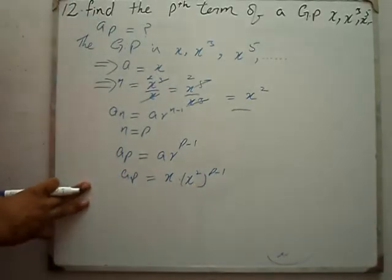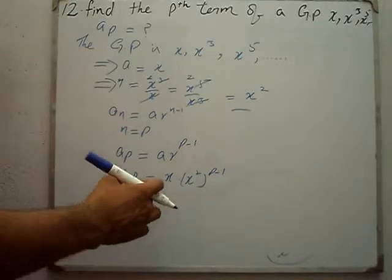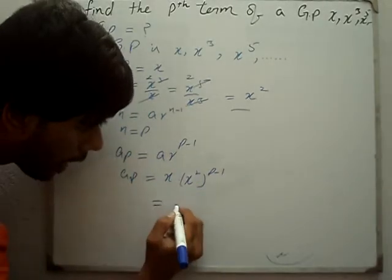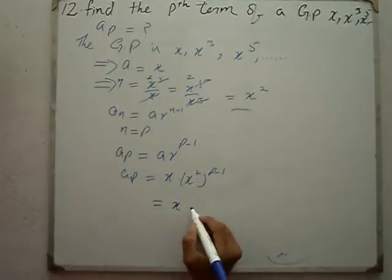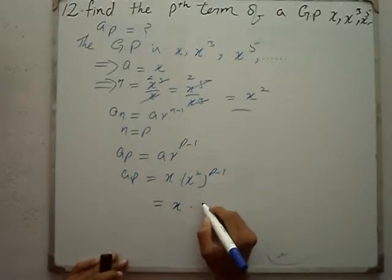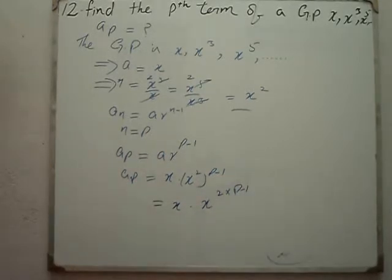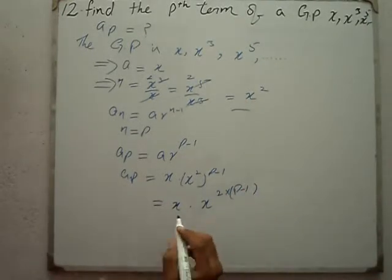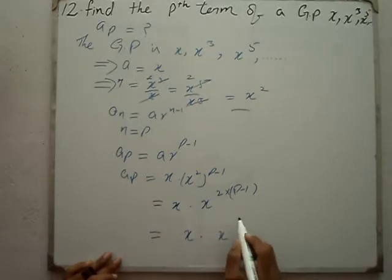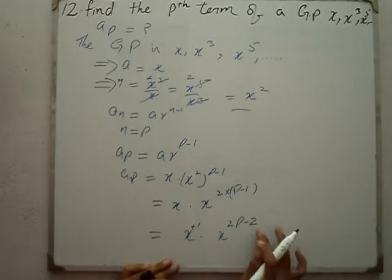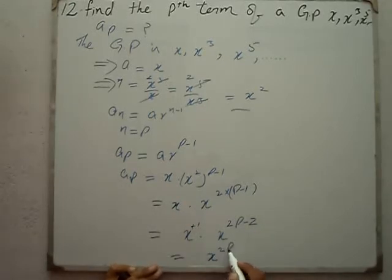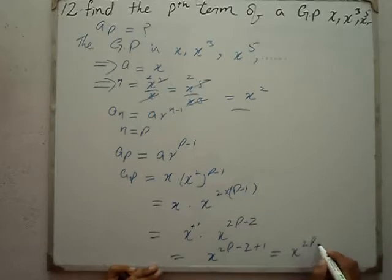Now what can we do with this? We can simplify by multiplying the exponents. x · (x²)^(p-1) becomes x · x^(2(p-1)), which gives us x^(1 + 2p - 2), equal to x^(2p - 1).